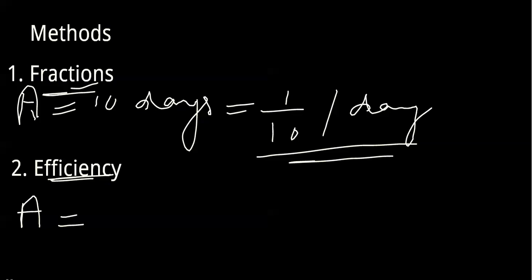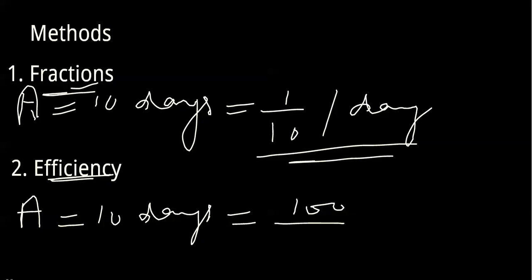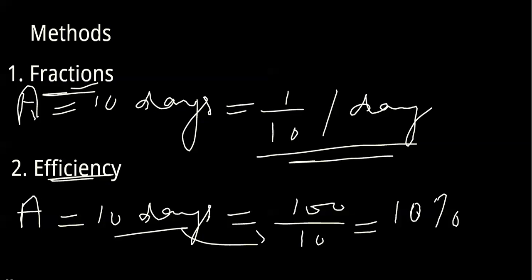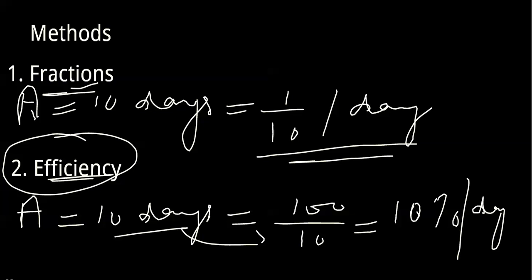If A can do a job in 10 days, his per-day efficiency is calculated as 100 divided by the number of days, which is 10. So A's efficiency is 10% per day. We are going to solve each and every question using this efficiency method.